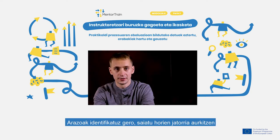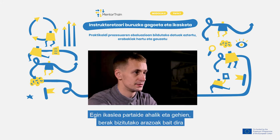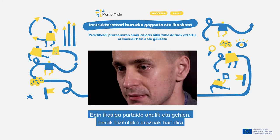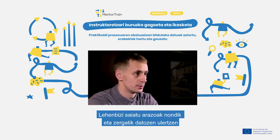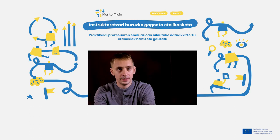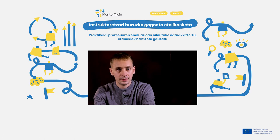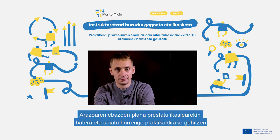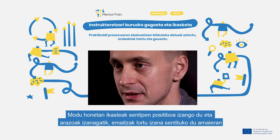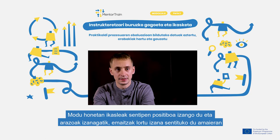If you find problems, try to analyze where they arose from. Involve the apprentice as much as possible, since these are the problems he or she experienced. First try to understand where the problems came from and why — did they start because of something not done by the apprentice or by the organization? Make a plan with the apprentice on how to solve it and try to implement it next time. This way the apprentice has a positive feeling and a sense of achievement in the end, even though there were problems.